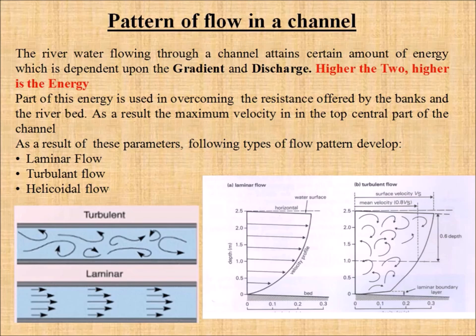Part of this energy is used in overcoming the resistance offered by the river bed and the banks. The water moves down with banks on the sides and the river bed at the base. As a result, the maximum velocity of water is in the top central part of the channel through which it is flowing.